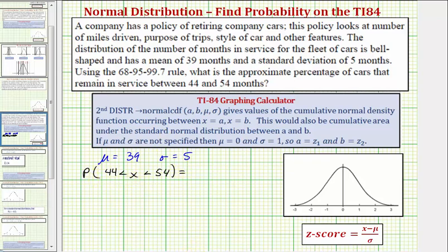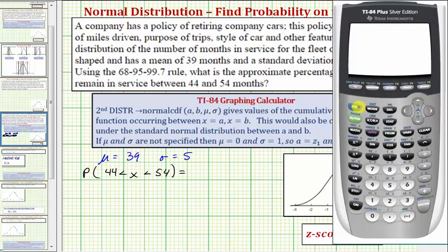So now we'll go to the calculator. We press second VARS for the distribution menu. We want option two, normal CDF.